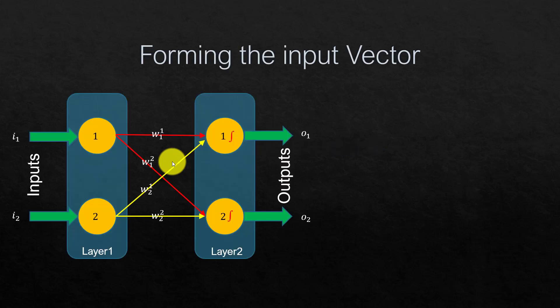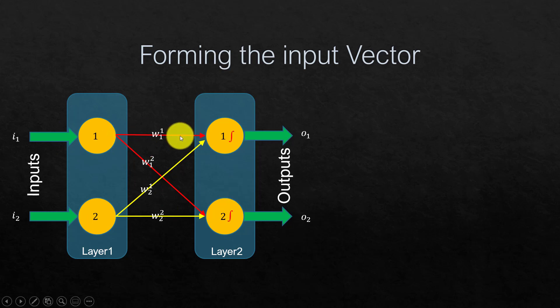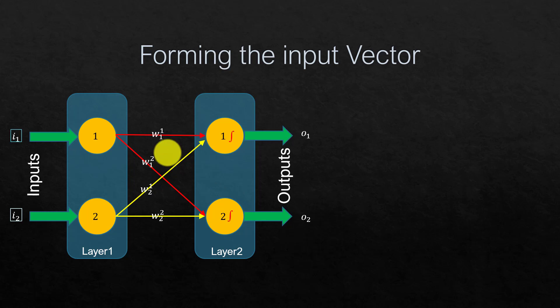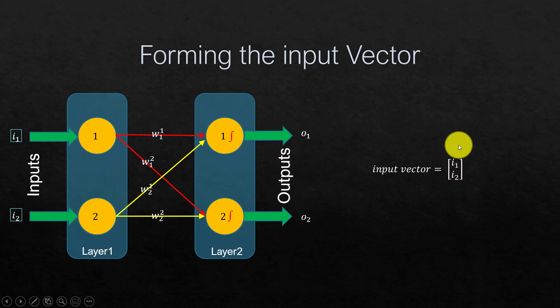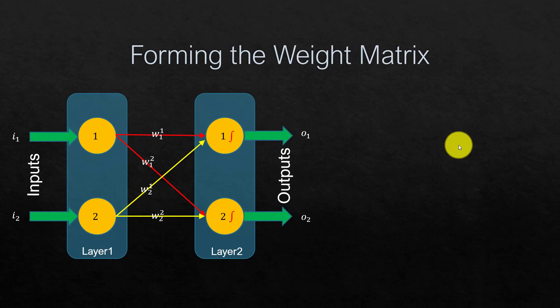Let's reason through it. We have the same setup: two layers, inputs and outputs, connected with different weights from the previous layer. Think about those two inputs i1 and i2. We can define an input vector, because it has a single dimension across the different inputs. A vector is the one-dimensional tensor, as we discussed when we talked about different types of tensors.